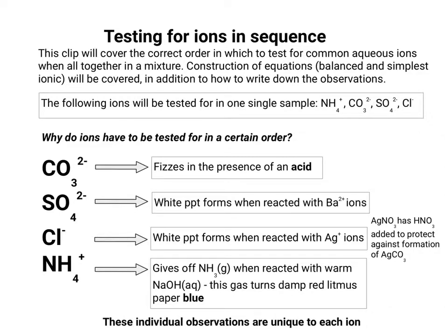In the chloride test, when you use silver nitrate as your source of Ag⁺, you add a little bit of HNO₃. What this does is protect against the formation of AgCO₃ and it gets rid of any carbonate ions left over from the first test.